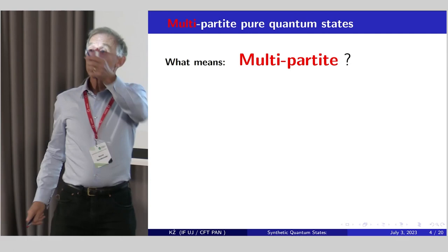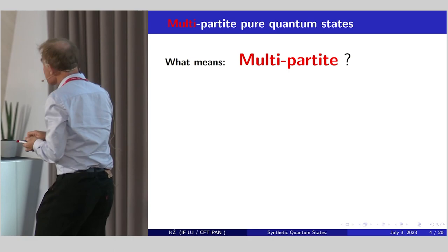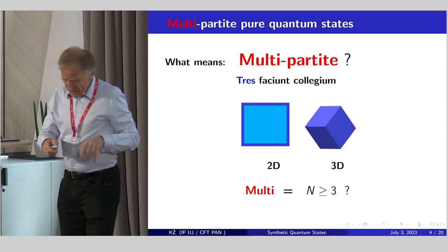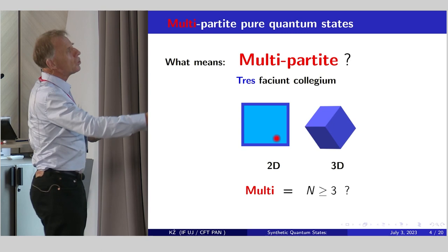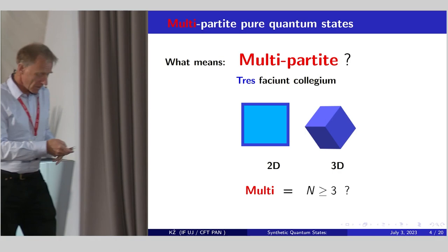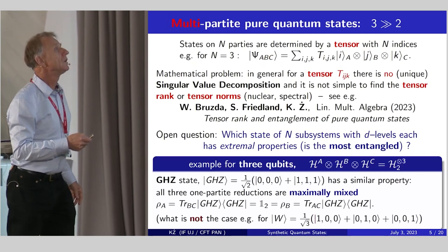Now we are going to talk about multi-party systems. A simple question: what is multi? For me, two is bipartite and three and more is already multi. There is a simple saying, tres faciunt collegium, so three makes a team. Three is already multi for me. Moreover, there is a simple geometric observation. In 2D, we have two-dimensional objects like a square. It's much simpler than three-dimensional objects like a cube. So this analogy will be used very soon.